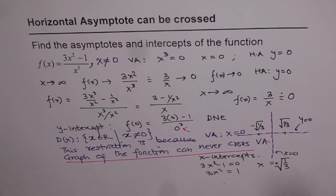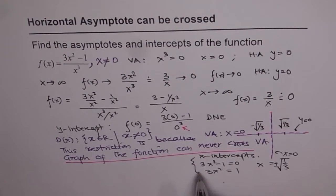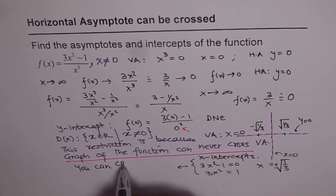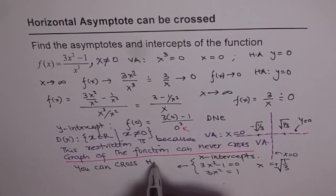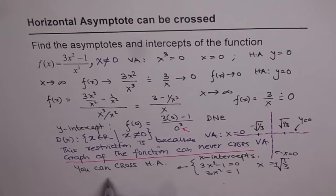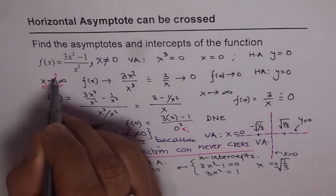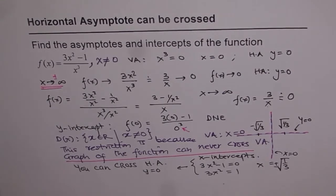So that means if you have x-intercepts, you can cross the horizontal asymptote. Since our horizontal asymptote is y = 0, and you have x-intercepts, you are crossing it. Horizontal asymptotes do not restrict the domain — a horizontal asymptote is defined at infinity (plus or minus), but not in between. Therefore you can cross the horizontal asymptote.